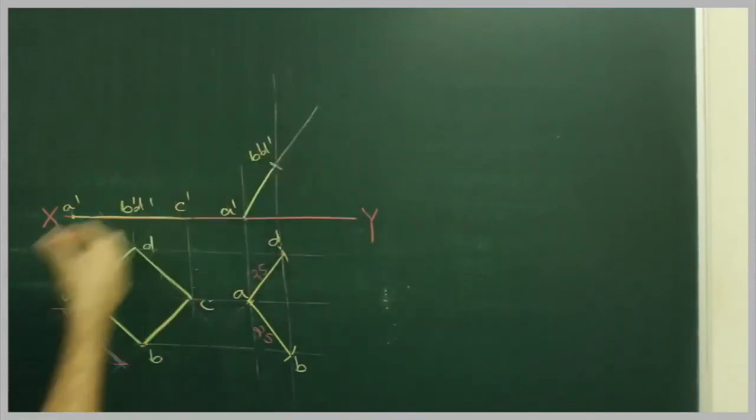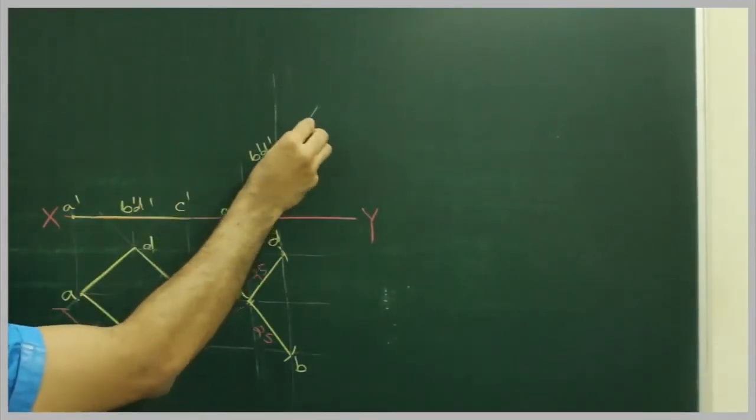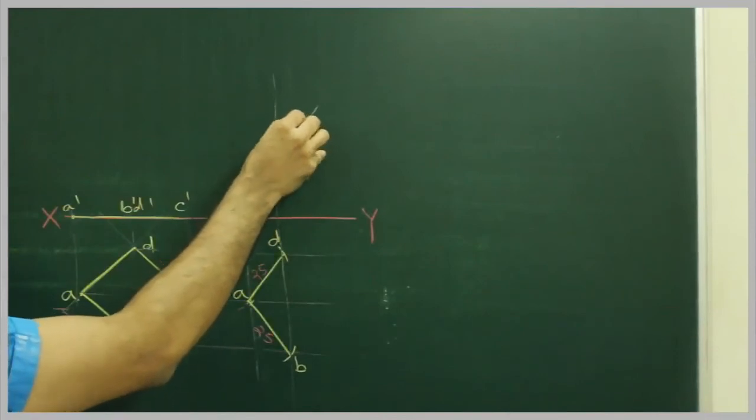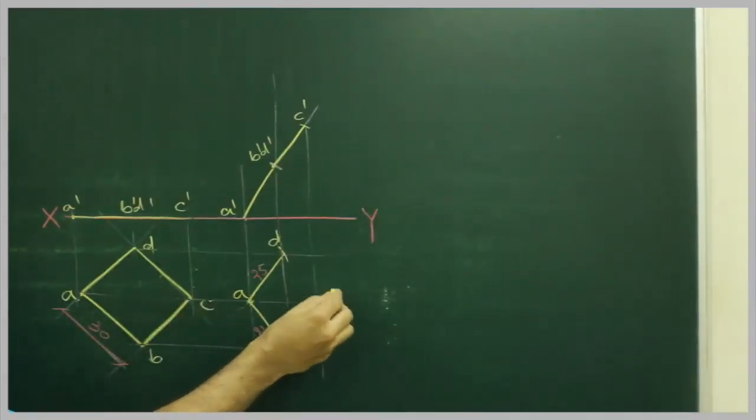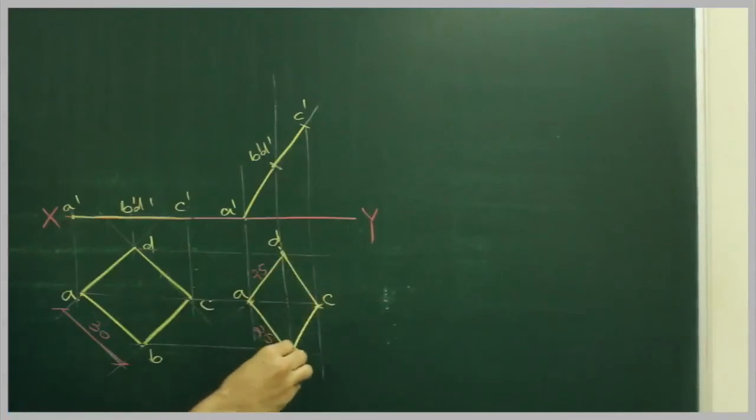So we get C dash. From there I will project this down. And from here I will project this down. And from here horizontal. So wherever it will cut, that is C. So we got front view and top view of the required question.